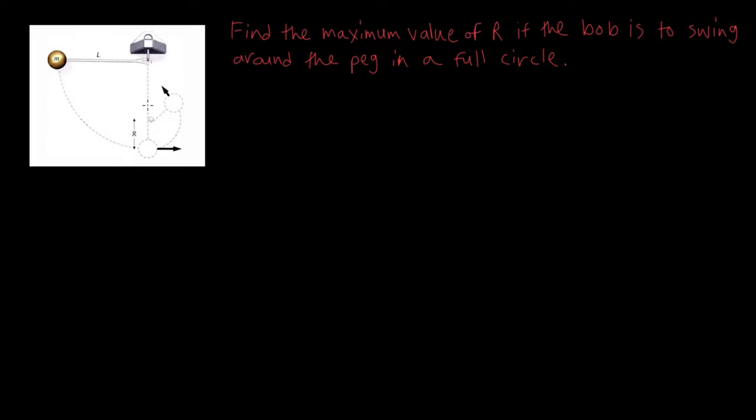When the pendulum gets caught on the thin peg, we want the pendulum bob to swing around in a full circle. We want to find a value of R such that the pendulum is able to complete a full circle around the thin peg when it gets caught. So let's write it down: we want to find the maximum value of R if the bob is to swing around the peg in a full circle.